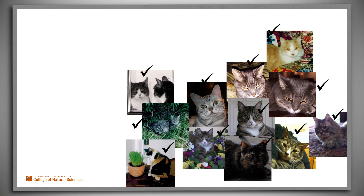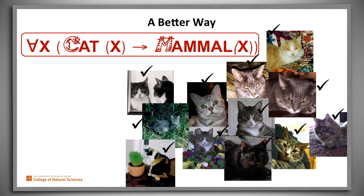But quantified logic, again, gives us a much better way. We can write: for all x, if x is a cat, then x is a mammal.